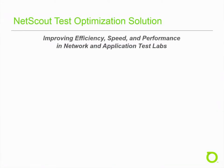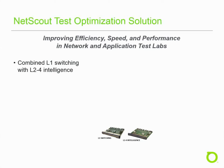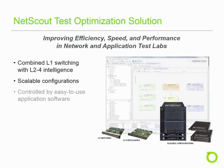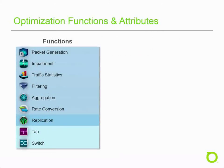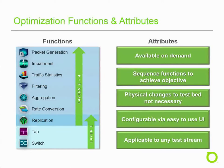NetScout's test optimization solutions help improve the efficiency, speed, and performance of cyber and security test labs. This is done by combining layer 1 switching with layer 2 through 4 intelligence in scalable configurations, all controlled by easy-to-use application software or third-party tools. Combining layer 1 switching with layer 2 through 4 intelligence enables lab managers and test engineers to access functions that would otherwise require additional equipment. Supplying higher-level functions along with layer 1 switching simplifies the test configuration and reduces variability in test execution. These functions can be applied to any test stream without the need to physically access the lab. Let's take a closer look at some of the functions.